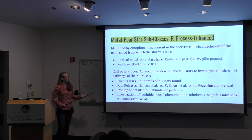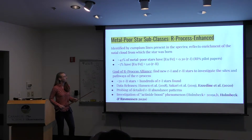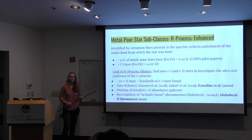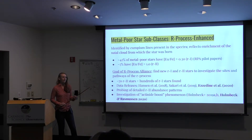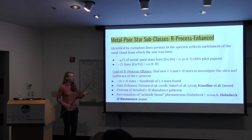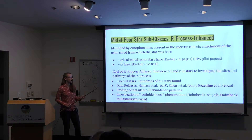Another really important subclass is the R-process-enhanced stars, identified by their europium content. 42% of metal-poor stars have a europium abundance above 0.3 — we call them R1. 7% have a europium abundance above 1 — we call them R2. Because these stars are so important, we have a big collaboration dedicated to finding and exploring them, called the R-Process Alliance. The goal is to find new R1 and R2 stars to investigate the sites and pathways of the R-process.